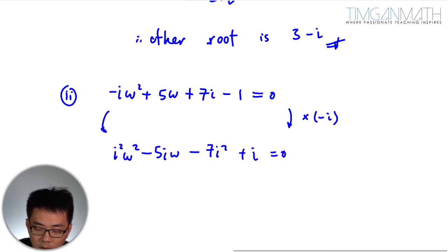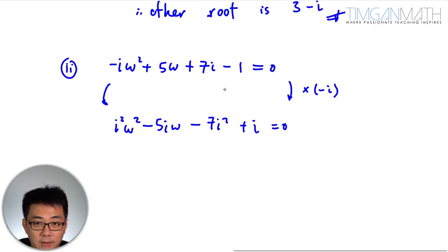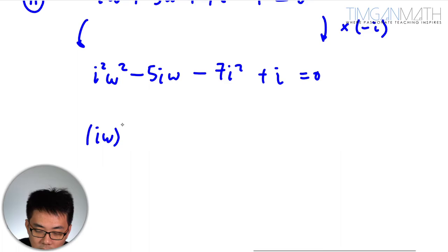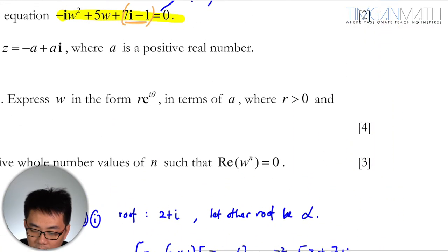So you multiply both sides by negative i. So negative i times negative i will be i square. So also this part here we get is iw square minus 5iw plus 7 plus i equals to 0. So this is similar to what we got here.